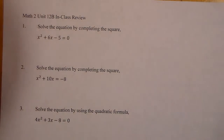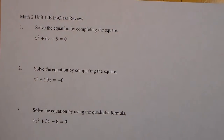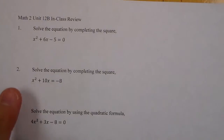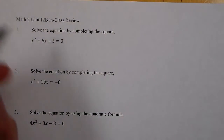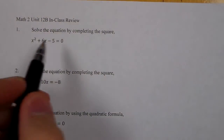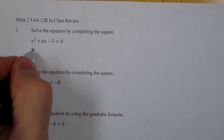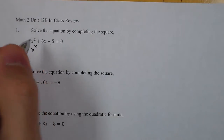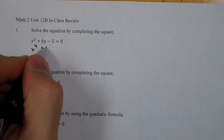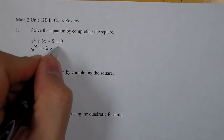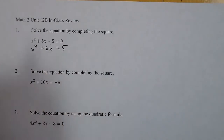This is our Unit 12B in-class review. The first problem wants us to solve the equation by completing the square. To complete the square, we first have to add the 5 over. We get x squared plus 6x equals 5.